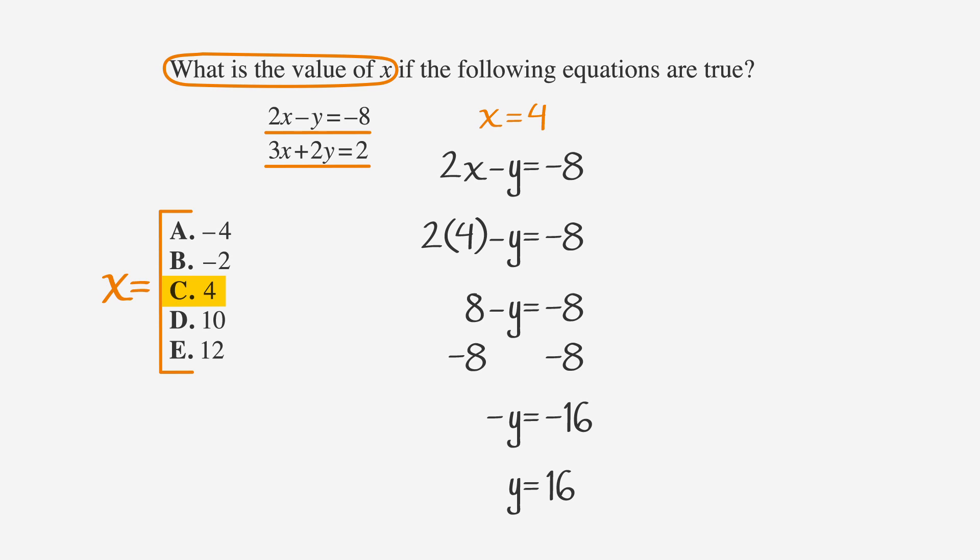If we plug 4 into the second equation, then 3 times 4 plus 2y equals 2 is 12 plus 2y equals 2 when you distribute the 3. Subtract 12 from both sides, and 2y equals negative 10, and y equals negative 5. Since negative 5 isn't equal to 16, we can cross out C.